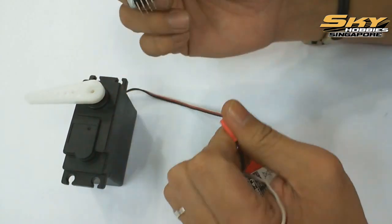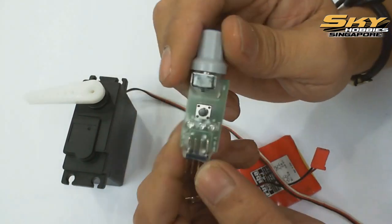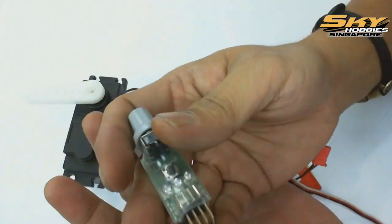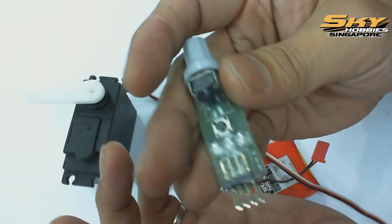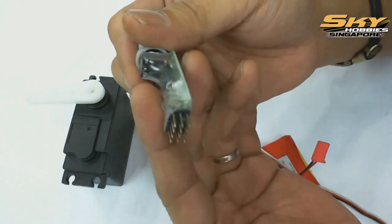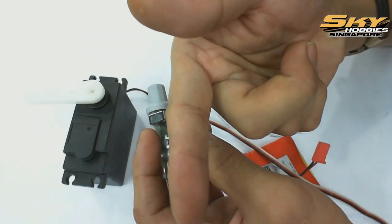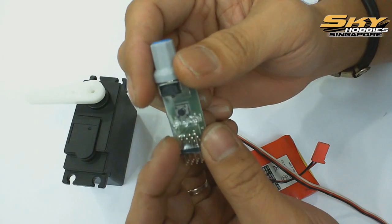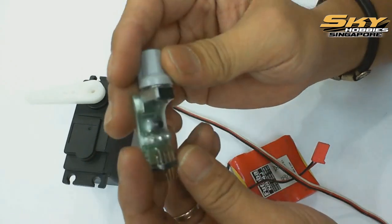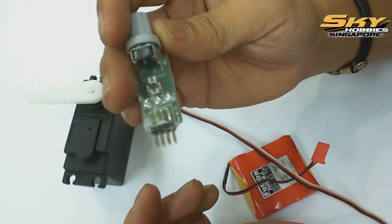This is a small little pocket servo tester weighing only 3.8 grams. If you have any questions, just feel free to drop us a line in the comment box below or hit the link below for more of the specs and details of this product right here on Sky Hub. Thanks for watching.